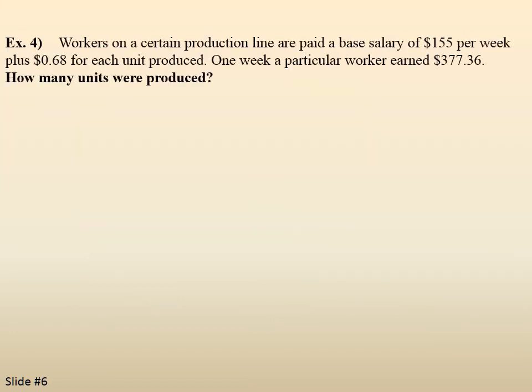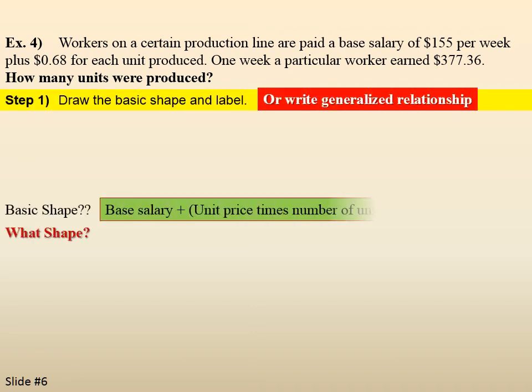Example four. Workers on a certain production line are paid a base salary of $155 per week plus 68 cents for each unit produced. One week, a particular worker earned $377.36. How many units were produced by this worker? Step one, draw the basic shape. Again, we don't have a basic shape, but we do have a generalized relationship. Base salary plus the unit price, 68 cents, times the number of units will equal wages. So, the base salary plus the amount that they are going to earn by the number of items they produce will equal the wages.